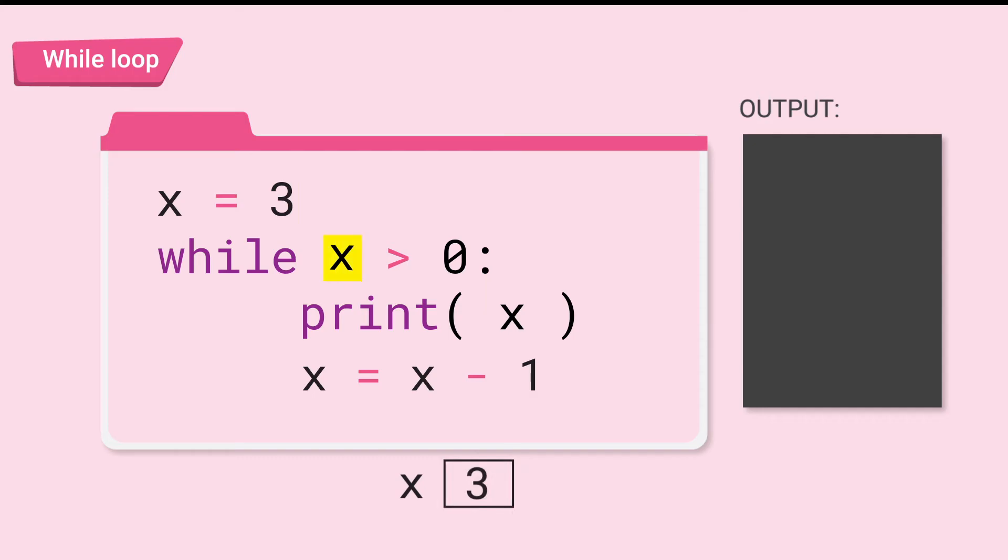Next line, is x greater than 0? Yes. 3 is greater than 0, so enter the loop. Next, print x. x is 3, so the output is 3.